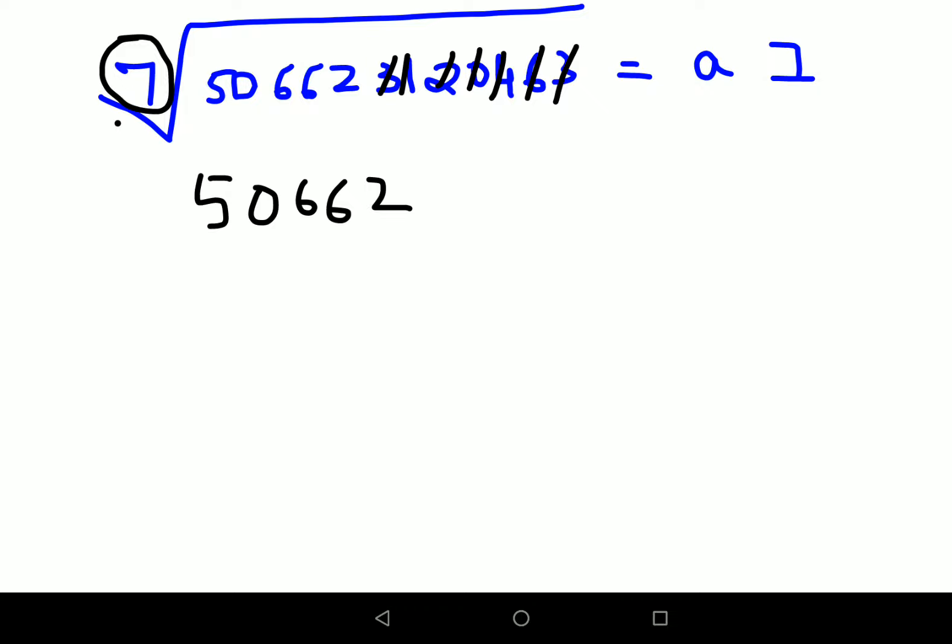Now, what you will do next is, we will try to find the value of A in such a way that we will get number very close to this number but not more than that. So now, see, 3 raised to 7 we will check. Because 2 raised to 7 is very small. Then 4 raised to 7 we will check. 5 raised to 7 also we will check.